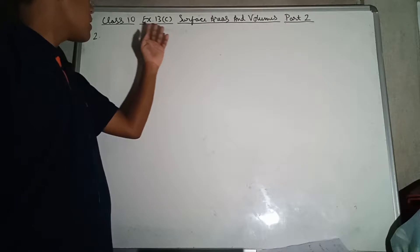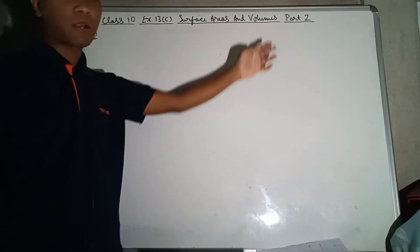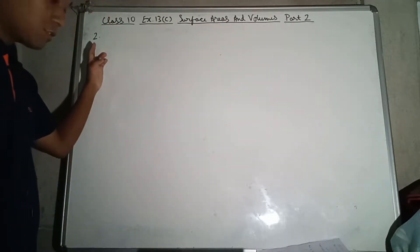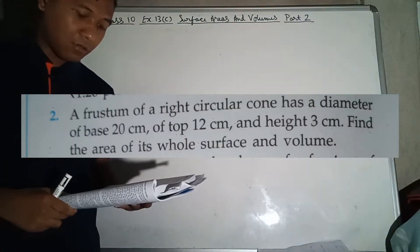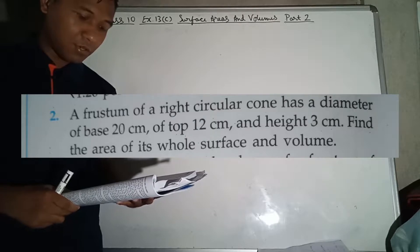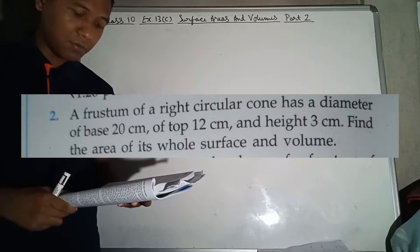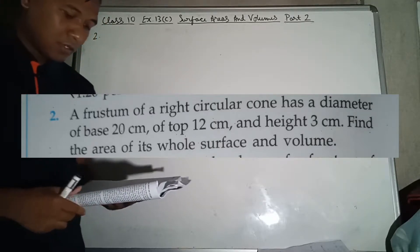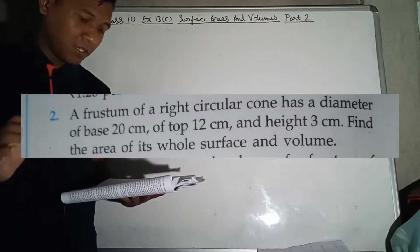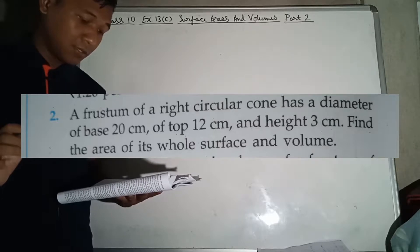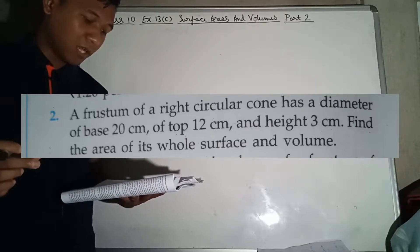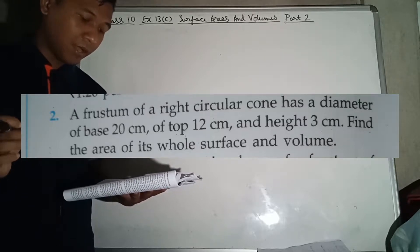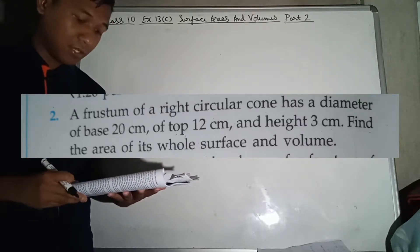Class 10 Exercise 13C Surface Areas and Volumes Part 2, Question Number 2. A frustum of a right circular cone has a diameter of base 20 cm, of top 12 cm, and height 3 cm. So the frustum diameter is 12 cm and bottom diameter is 20 cm, and height of frustum is 3 cm.